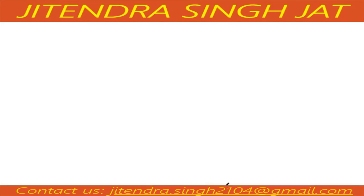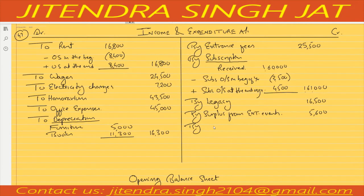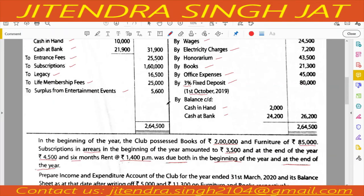For the three percent fixed deposit interest: 80,000 × 3% × 6/12 = 1,200. So interest on fixed deposit is income of 1,200. We record: by interest on three percent fixed deposit for six months — 1,200. All income points are now covered.